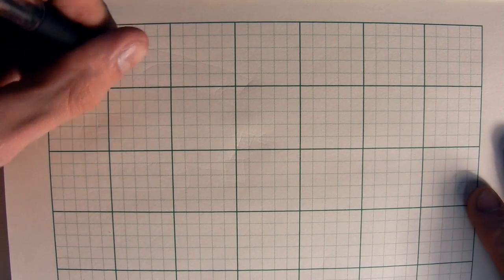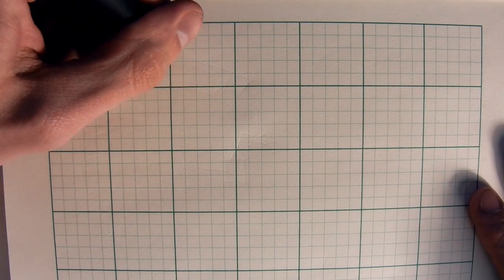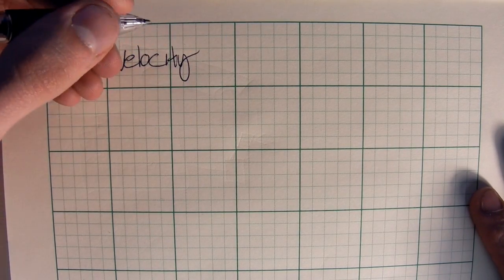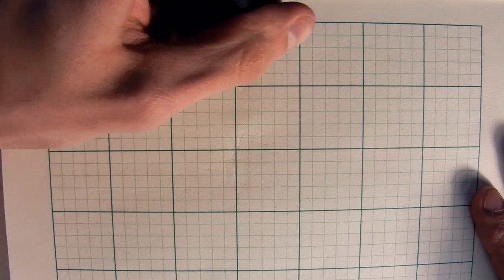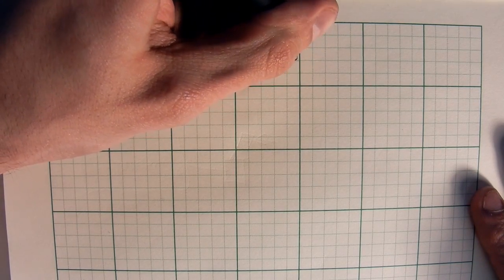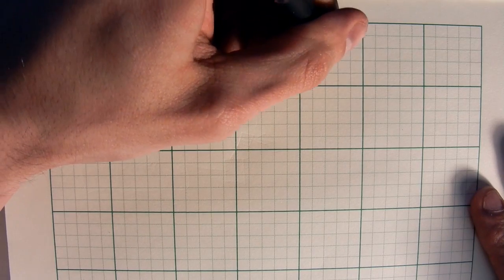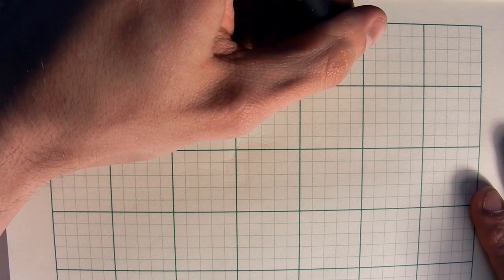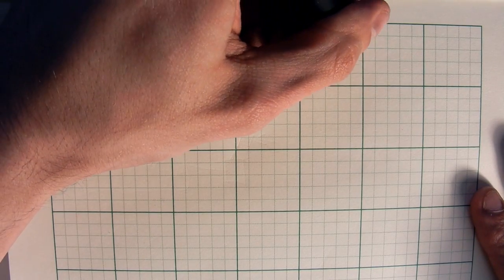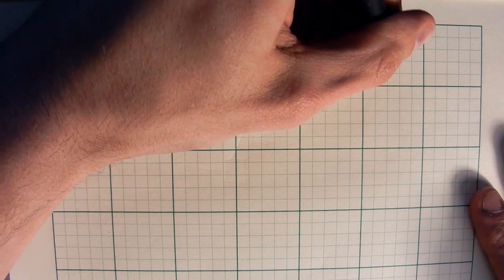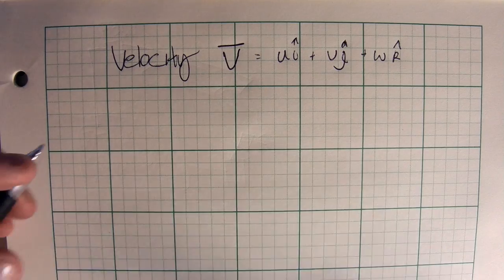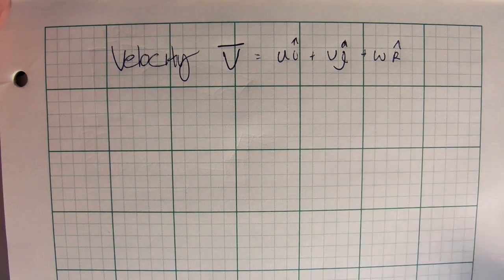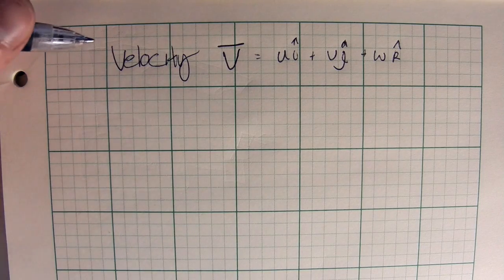First, we'll start with velocity — the velocity vector. That is going to be denoted as v-bar, and it is equal to lowercase u in the i-hat direction, plus v in the j-hat direction, plus w in the k-hat direction. That one's pretty self-explanatory; you've probably used it in many physics classes — nothing new.